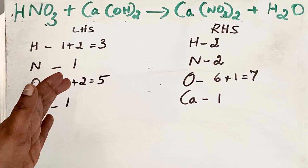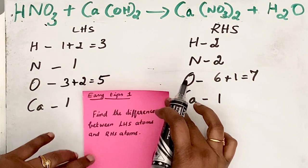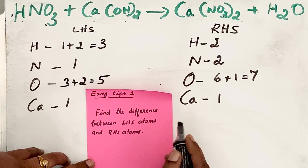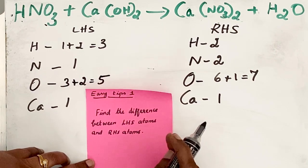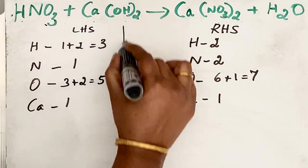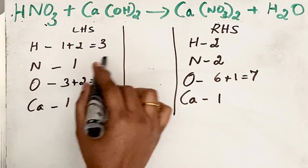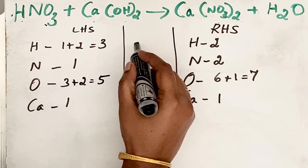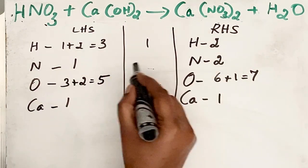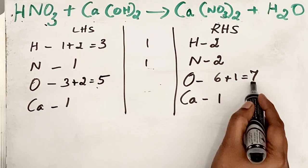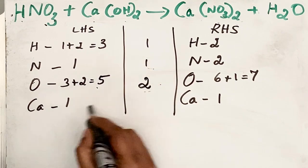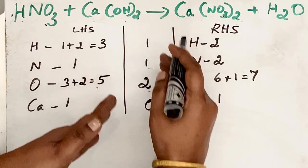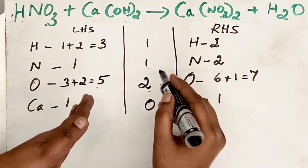According to these tips, find the difference between the left-hand side atoms and right-hand side atoms. If you find the difference, you will find it much easier and faster to complete the balancing. So let us draw a line and leave the space. Hydrogen: left-hand side three, right-hand side two, difference one. Nitrogen: two minus one gives one. Oxygen: left-hand side five, right-hand side seven, difference two. Calcium: one minus one gives zero.